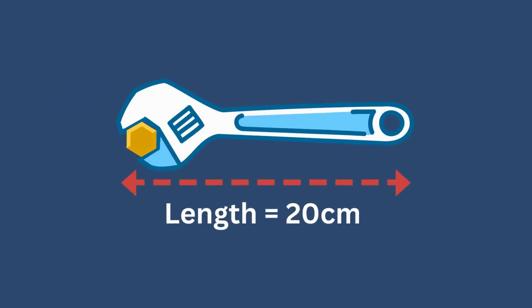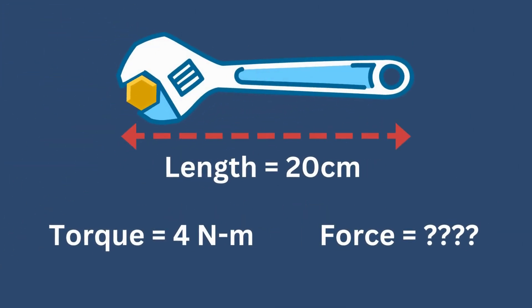Let us try an example. Suppose we have a wrench whose length is 20 centimeters. And the required torque to turn the wrench is 4 newton meters. What is the amount of force that you need?